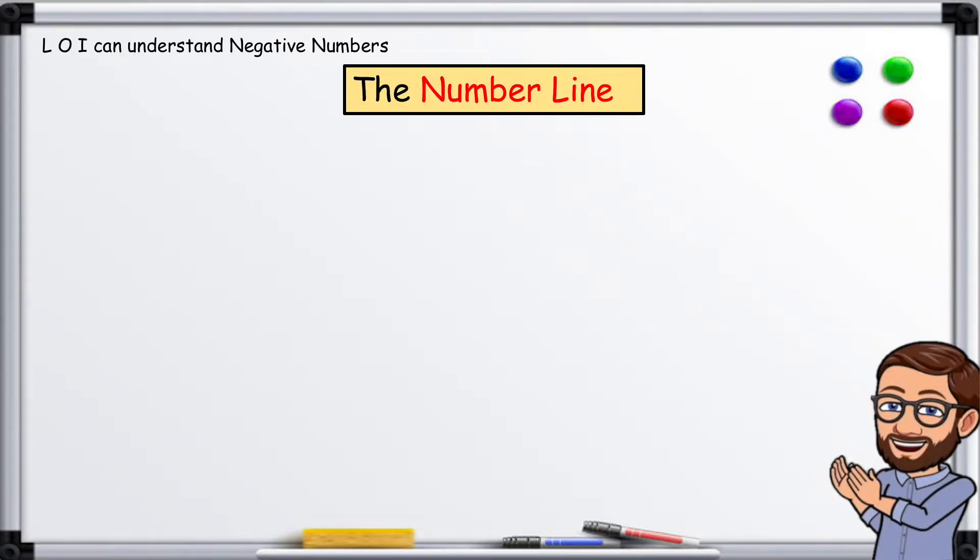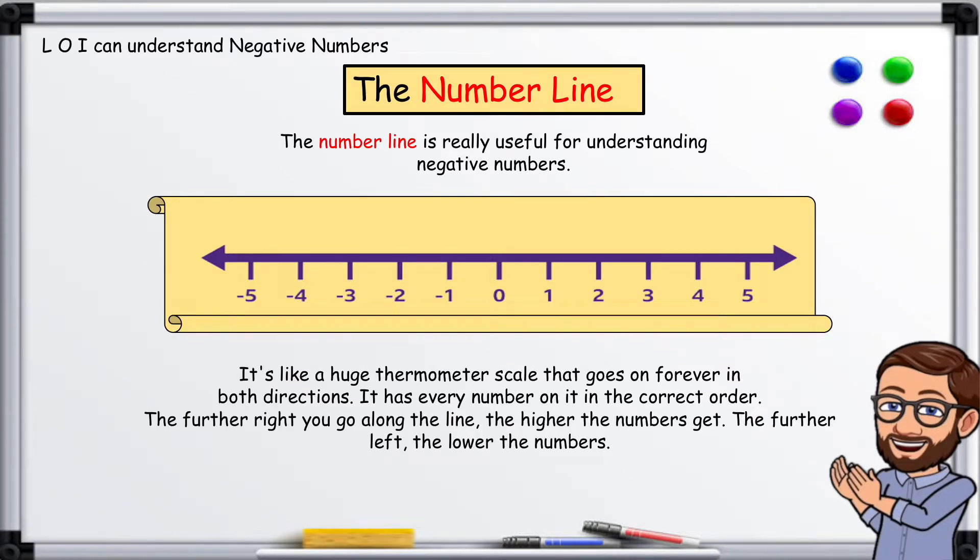The number line. The number line is really useful for understanding negative numbers. It's like a huge thermometer scale that goes on forever in both directions. It has every number on it in the correct order.